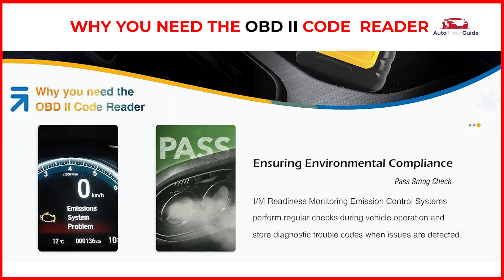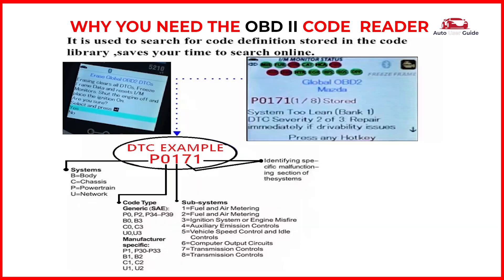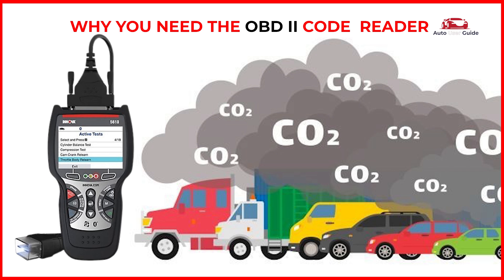I/M readiness monitoring: emission control systems perform regular checks during vehicle operation and store diagnostic trouble codes when issues are detected. Quickly get the fault code definition — no Google search needed. Get quick emission inspections and get ready for the annual smog check.